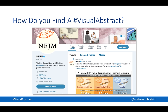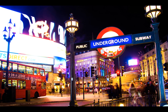So how do you find visual abstracts? At the moment, they are mostly found on the social media webpages of different organizations. If you go on social media like Twitter and look for the hashtag visual abstract, that is often how you will find many of these. They will often be on the account of the journal, linked to the article itself.